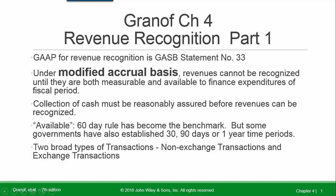Granoff Chapter 4, Revenue Recognition Part 1. The GAAP for revenue recognition is GASB Statement Number 33. Under the modified accrual basis, revenues cannot be recognized until they are both measurable and available to finance expenditures of the fiscal period. Collection of cash must be reasonably assured before revenues can be recognized.